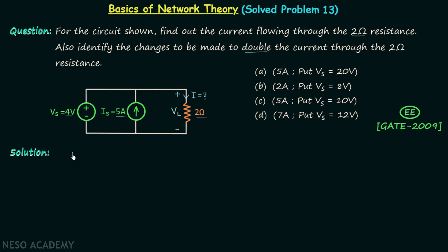Let's say the voltage across it is equal to VL. So current I will be equal to VL divided by 2. So if we can calculate VL, we will have current I.